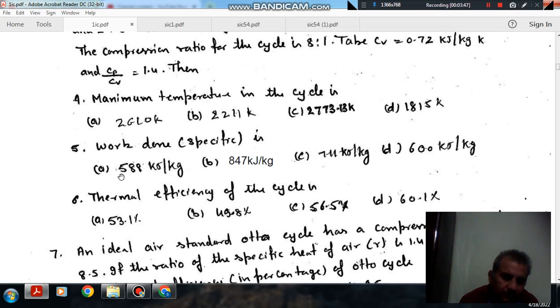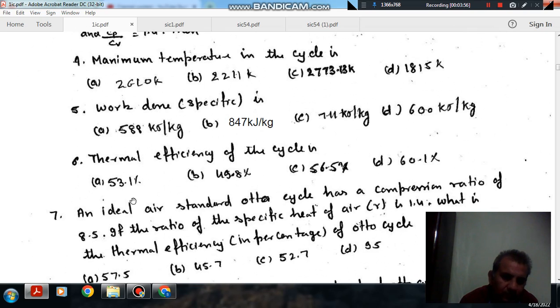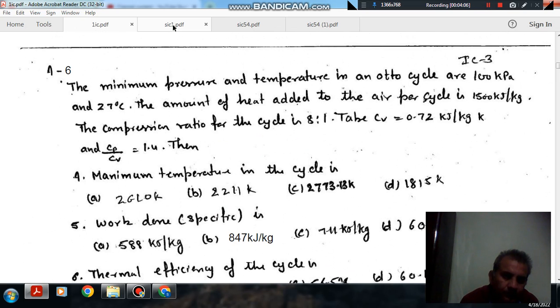Work done is 588 kJ per kg, 847 kJ per kg, 711 kJ per kg and 600 kJ per kg. Thermal efficiency of cycle is 56.1%, 41%, 56.8% and 60.1%.